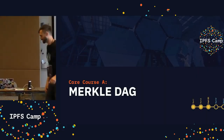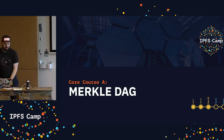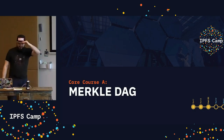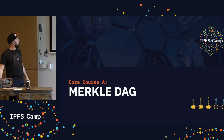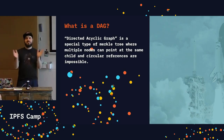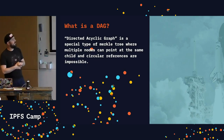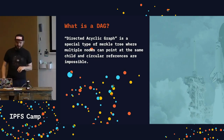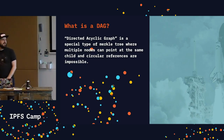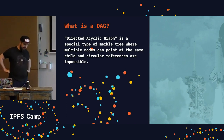Hey everybody. Now that we've done this three other times, this should go really well. So what's a DAG? I'm sure you've probably heard people throw this term around. DAG is just a fancy acronym for directed acyclic graph, which is a very fancy word for a really simple concept.